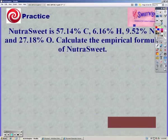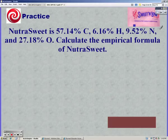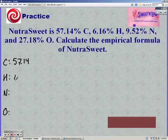Go ahead and try this one on your own and restart the video when you think you have it. So first we have to write out our elements. We have carbon, hydrogen, nitrogen, and oxygen. We have 57.14% carbon, 6.16% hydrogen, 9.52% nitrogen, and 27.18% oxygen.